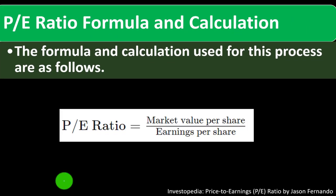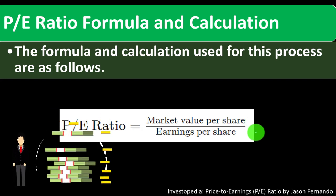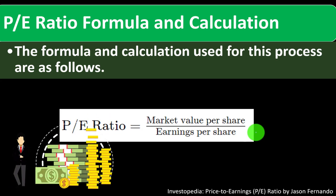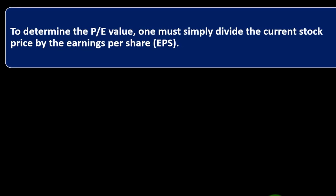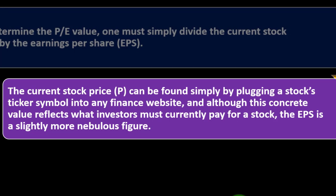The P/E ratio formula is: P/E = Market Value Per Share divided by Earnings Per Share. The market value per share is the share price determined by market supply and demand, not by the company itself. To determine the P/E value, one must simply divide the current stock price by the earnings per share. We talked about calculating EPS in prior presentations; once we have EPS, the next step is often calculating the P/E.